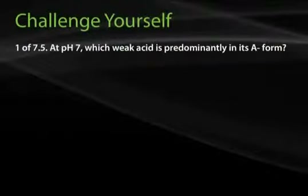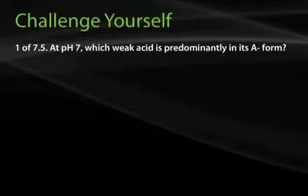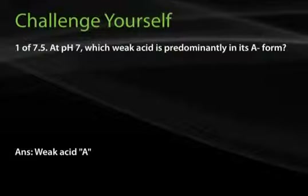Question 1: Weak acid A has a pK of 5.5, and weak acid B has a pK of 7.5. At a pH of 7, which weak acid is predominantly in its conjugate base form? The answer is weak acid A. This can be determined by the Henderson-Hasselbalch equation. Substituting the pH of 7 and the pK of 5.5, we can determine that weak acid A would primarily be in the conjugate base form.